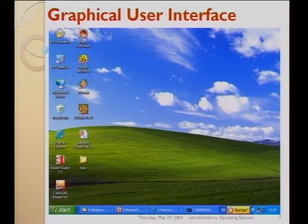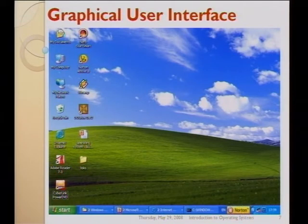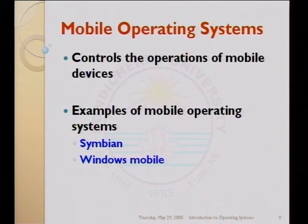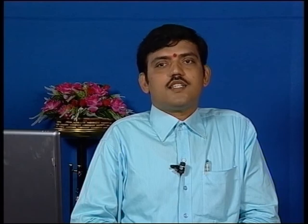The later development over the character user interface is the graphical user interface, simply called as the GUI. All the modern operating systems support the graphical user interface. It is not only the case with computers where operating systems are used. In the case of other devices like mobile phones also, we do have the operating system. Popular examples for mobile operating systems are Symbian OS and Windows Mobile, etcetera.